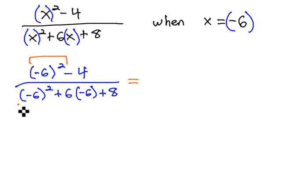Order of operations says to do the exponents first. Negative 6 squared is 36 minus 4 over negative 6 squared is 36 plus 6 times negative 6 plus 8.